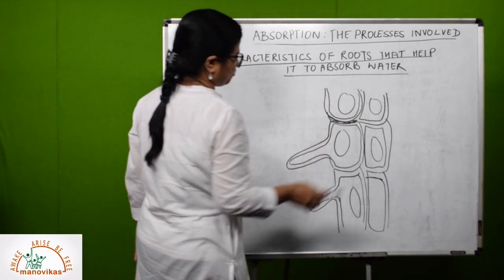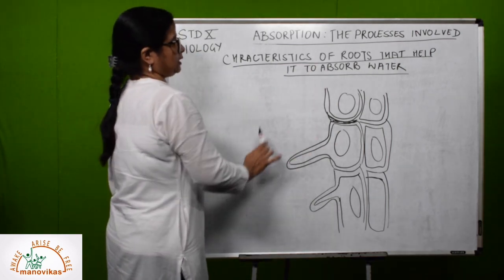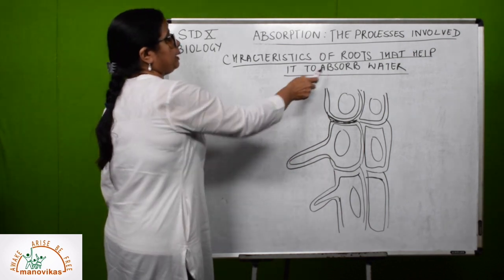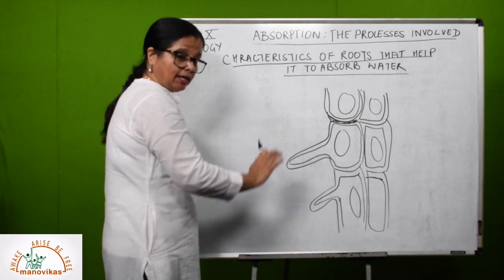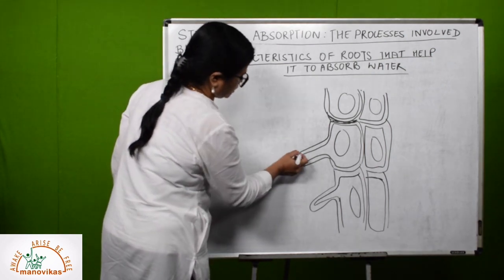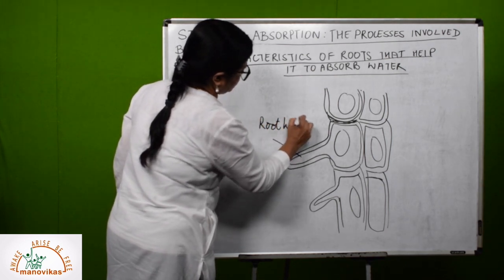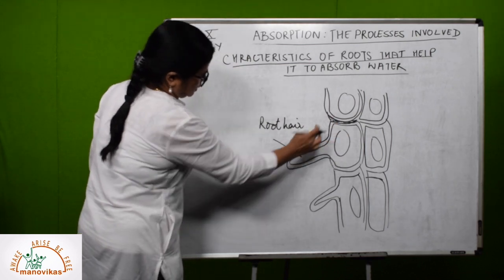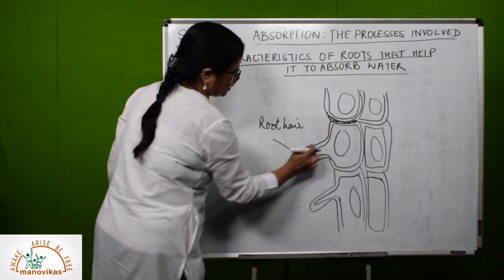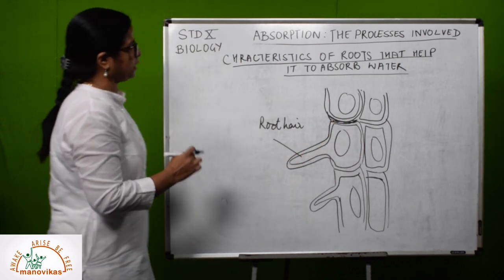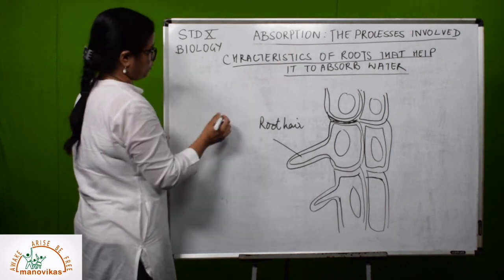Now let us look at the characteristics of roots that help them absorb water. The root has special structures whose ability to absorb water is enhanced by structural adaptations. What we see here is a root hair — it is an extension of the epidermal cells here to form the root hair. Now let's look at the first characteristic that enables the root to absorb water.